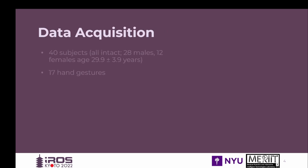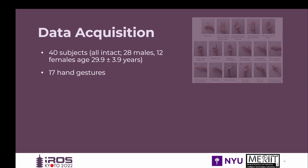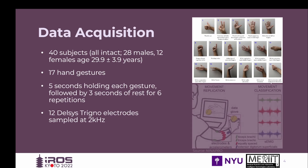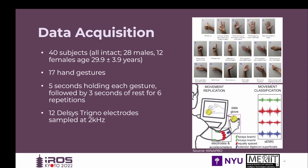Our work is based on the NinaPro database DB2, exercise B, which includes recordings of 40 healthy subjects performing 17 hand gestures. Each hand gesture was held for 5 seconds followed by 3 seconds of rest for 6 repetitions. The acquisition setup included 12 Delsys Trigno electrodes.